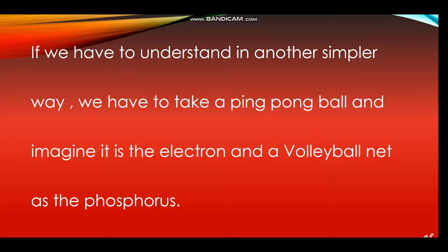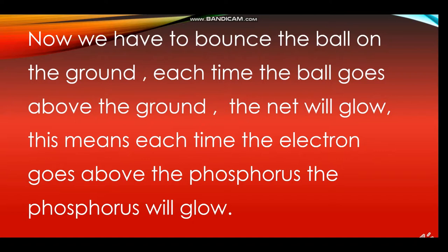To understand this in a simpler way, imagine a ping-pong ball as the electron and a volleyball net as the phosphorus. Each time the ball bounces above the ground and passes the net, the net glows. This means each time the electron passes above the phosphorus, the phosphorus will glow.